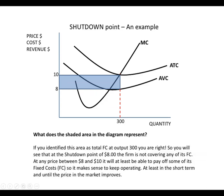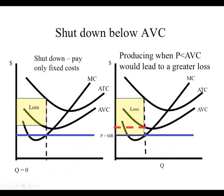This is a graphical example. The shutdown point is going to be right here — at 8 — because that's the minimum of average variable cost, and it's where if the price is below that, we're going to shut down. If the price is above that, we're actually going to stay in business because the loss won't be as much. So if the price was nine, we're going to cut this loss in half — I'm still going to lose money, but not as much as I would if I completely shut down.